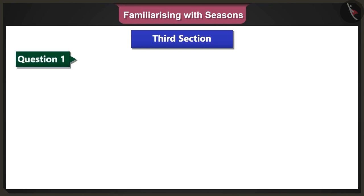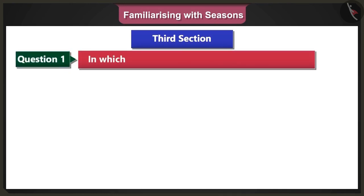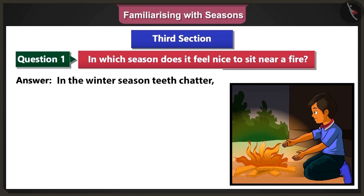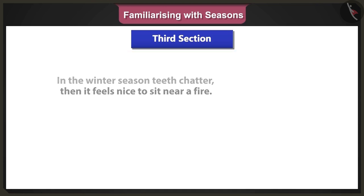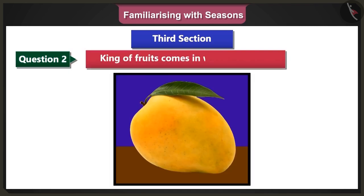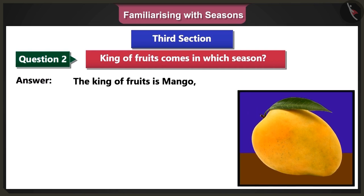First question of the third section: In which season does it feel nice to sit near a fire? Answer: In the winter season, teeth chatter, then it feels nice to sit near a fire. Second question: The king of fruits comes in which season? Answer: The king of fruits is mango. This comes in the hot or summer season.